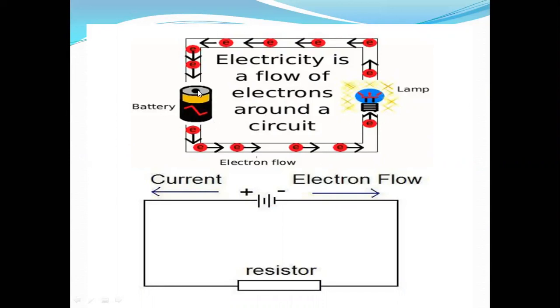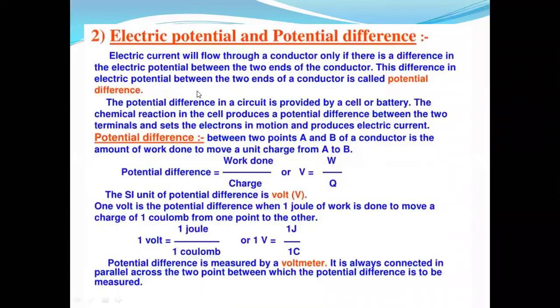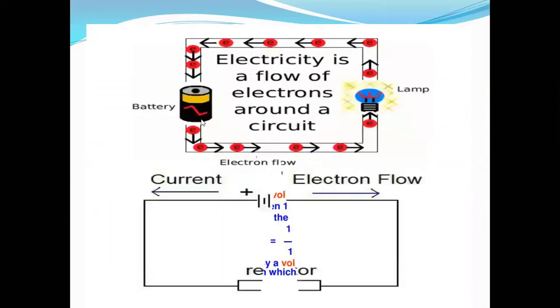Electrons are flowing from negative to positive direction. Electric current, however, flows from the positive direction to the negative direction.